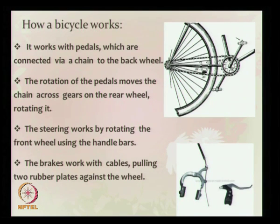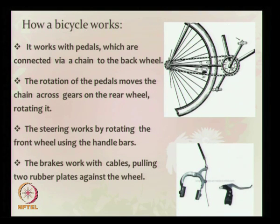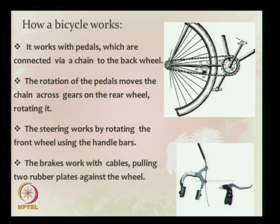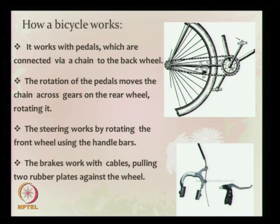Coming to the working model, the bicycle works with pedals which are connected by a chain to the back wheel. The rotation of the pedals moves the chain to the rear wheel by rotating it. We can control the cycle steering by rotating the handle. We can stop the cycle by applying the brakes, which are connected with cables to the rubber plates.